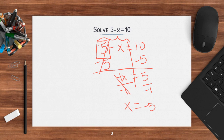Now, if I have 5 minus negative 5, does that equal 10? Well, minus a negative turns to plus positive. So then I would have 10 equals 10. And that's right. So always check yourself.